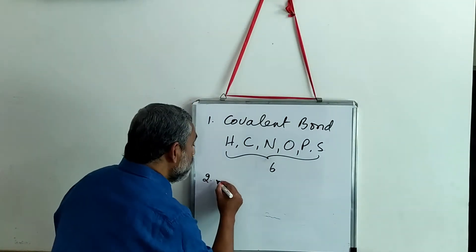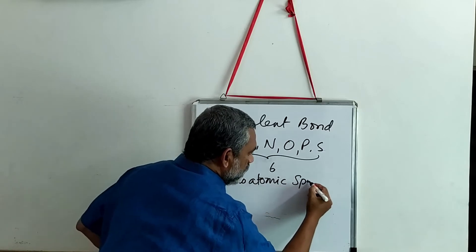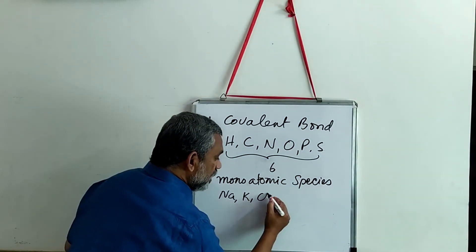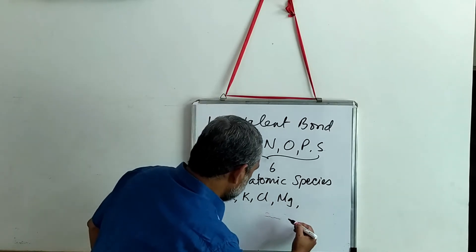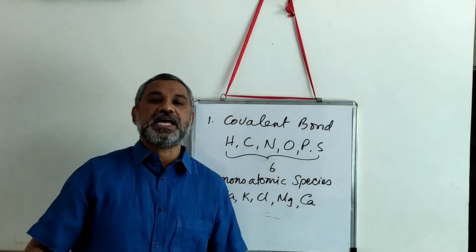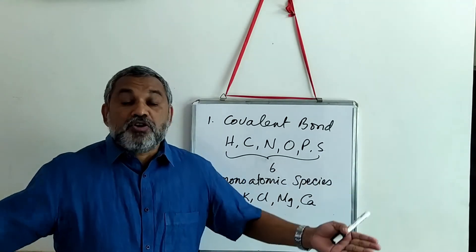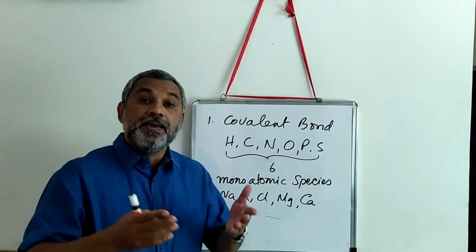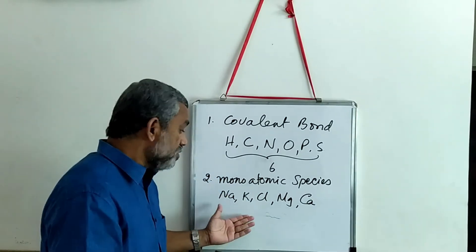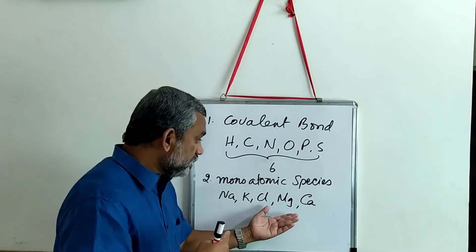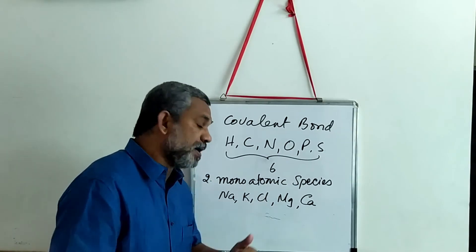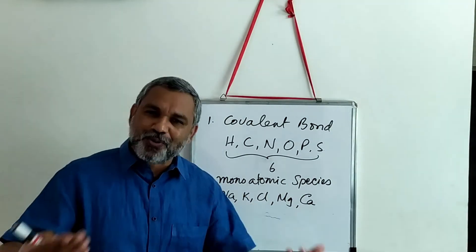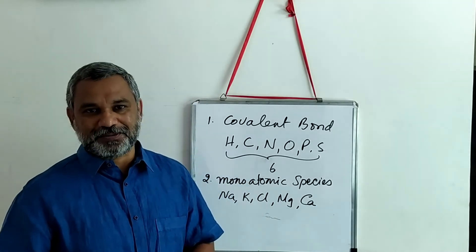In the second category are monoatomic species. Which elements fall under monoatomic species? You have sodium, potassium, chlorine, magnesium, and calcium. There may not be any special particular reason for selecting them, but these elements play a crucial role — like maintaining osmotic balance and maintaining action potential. Some of them are also involved in neutralizing charge. For example, magnesium is involved in neutralizing the charge on an ATP molecule.